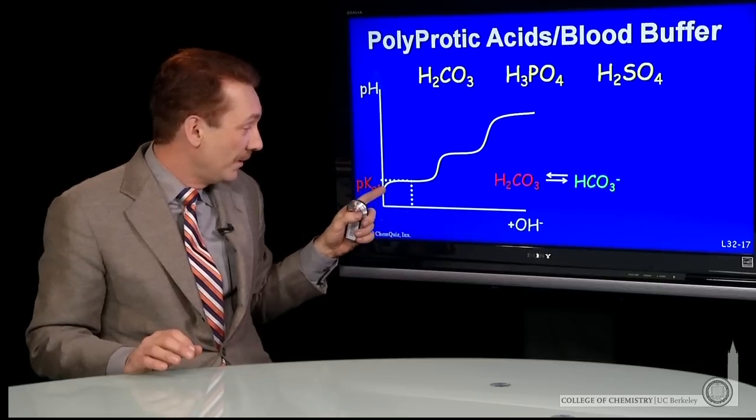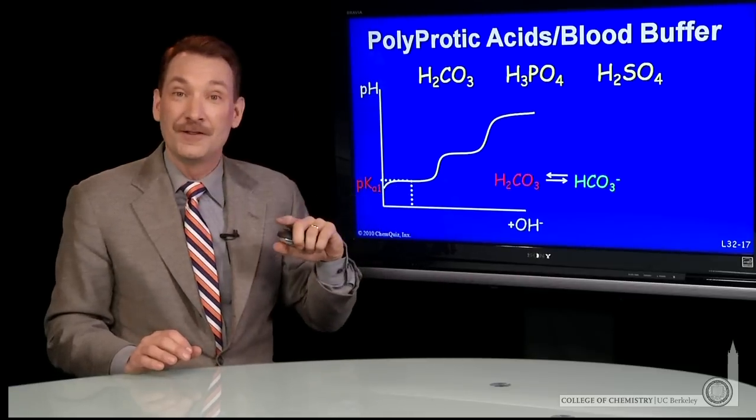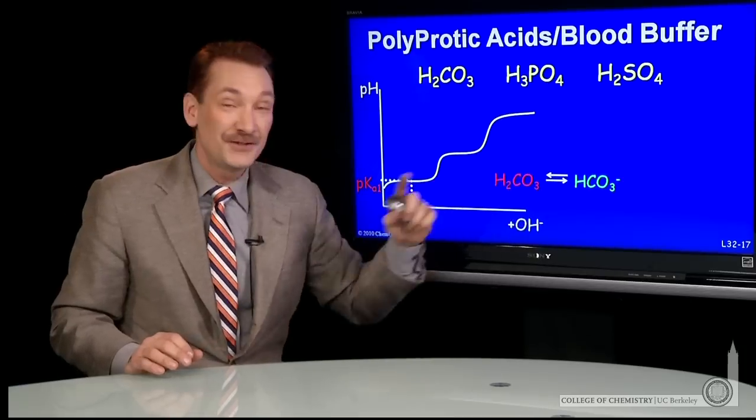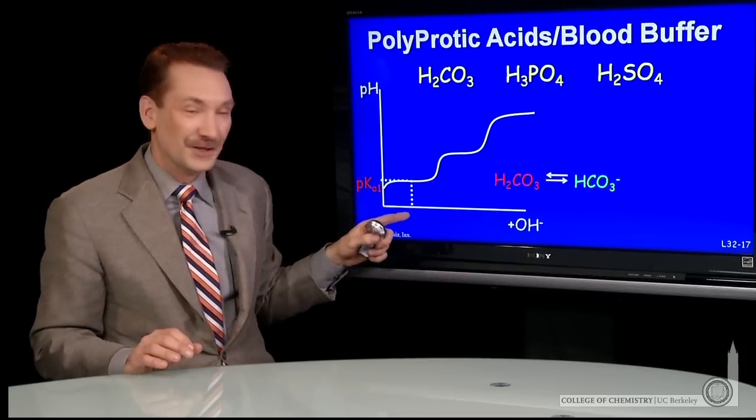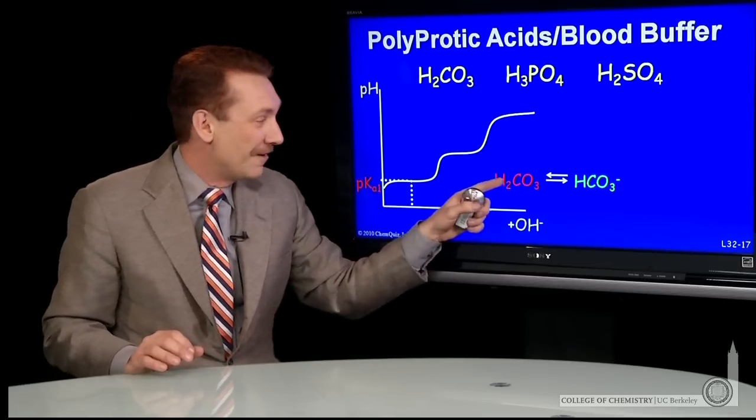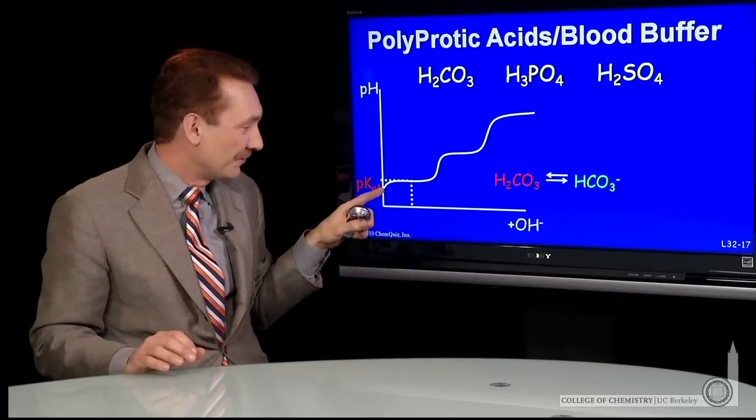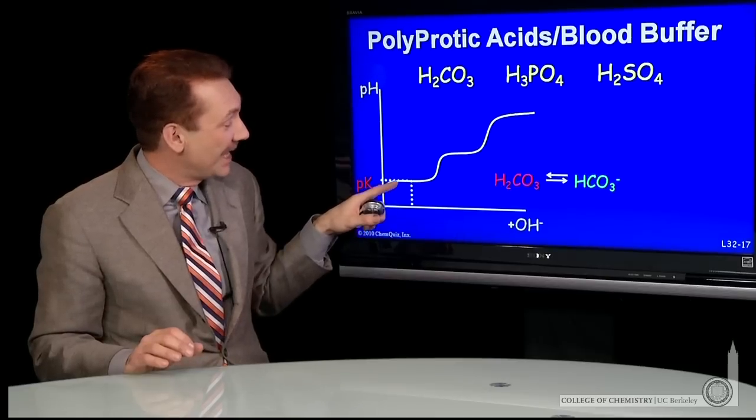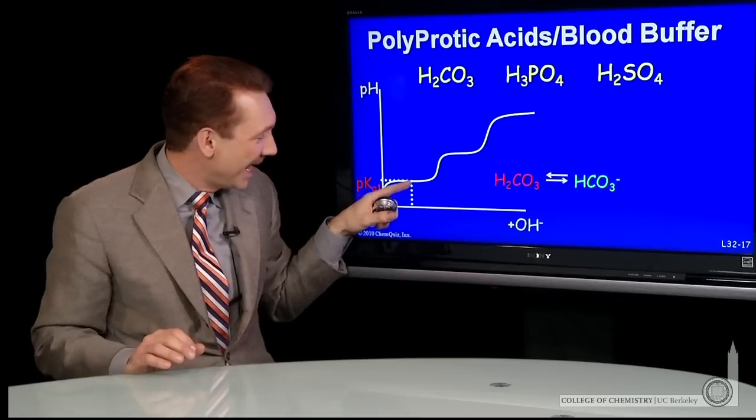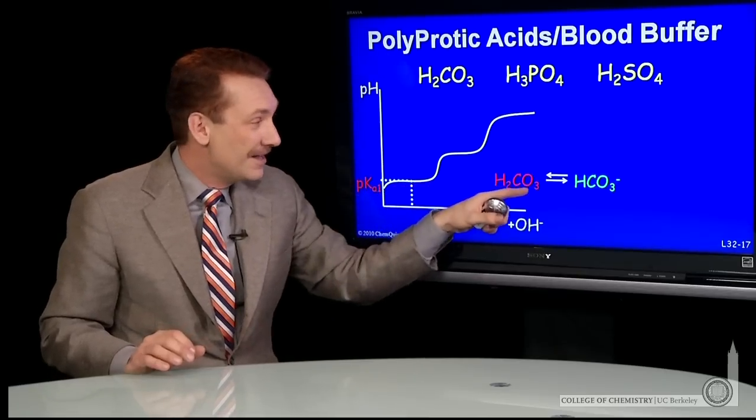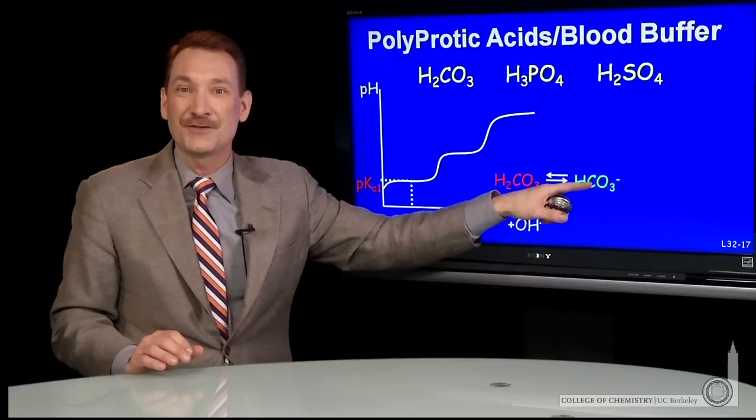the first proton coming off. So I can look at this and I say, well, below the first pKa, the acid form predominates. Above the first pKa, the base form predominates. So at the half equivalence point, I have an equal mixture of the acid and base form. So let's go along the titration curve. Mostly acid form to start, as I get to half equivalence, equal concentration of the acid and base. As I go beyond that, the base form starts to predominate. And when I get to the first equivalence point, I'm all the base form.